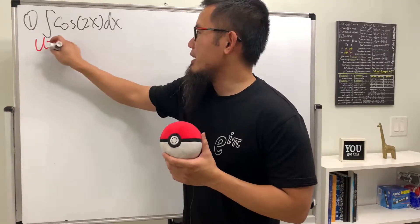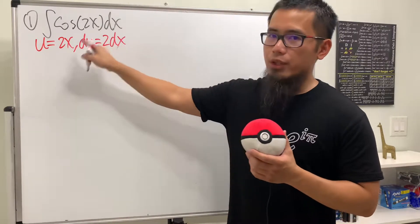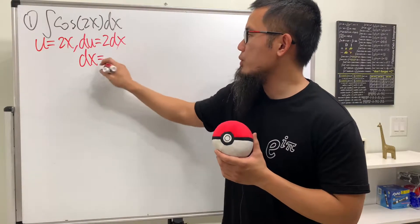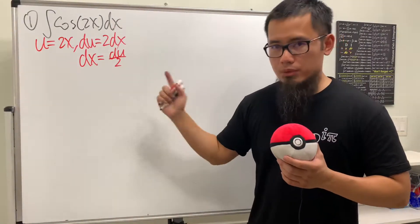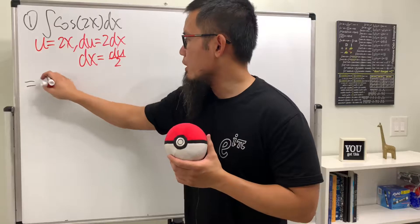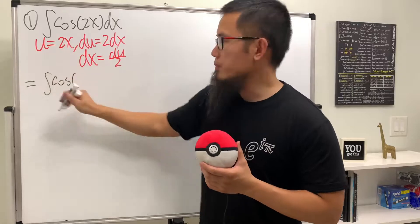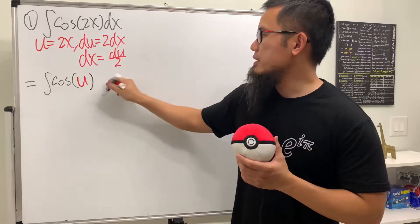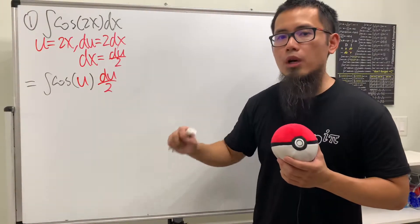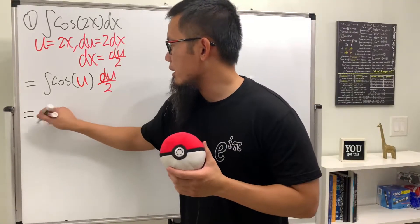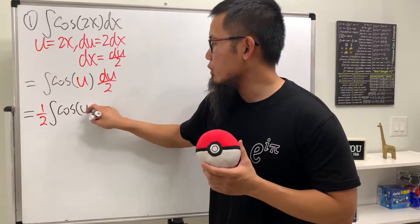We will start by taking u-sub. Let u equal 2x, and we see du is just going to be 2dx. Dividing both sides by 2, we get dx equal to du over 2. Now we can take this integral to the u world. We get the integral of cosine — the input is 2x, which is just u — and dx is just du over 2.